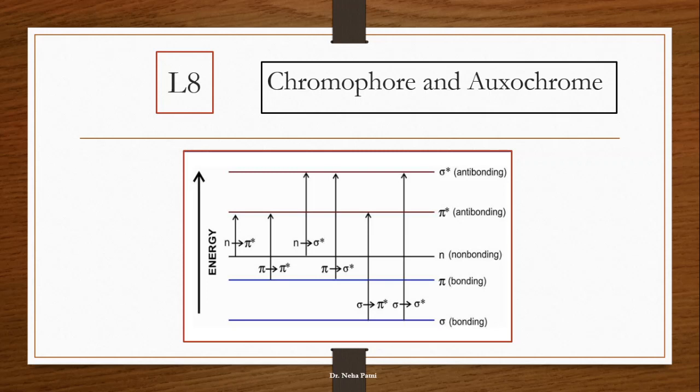So those functional groups which themselves do not possess color but in coordination with chromophore they do excel that color, that particular compound is known as auxochrome. So in this lecture we'll see about chromophore and auxochrome concepts.